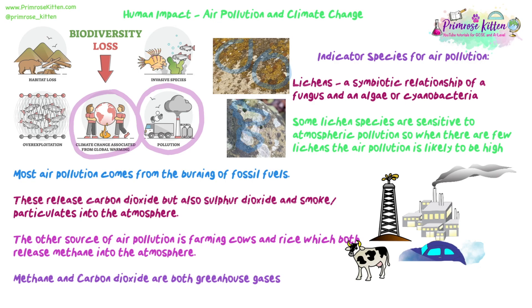Rice needs very special requirements of being quite waterlogged, so it's often grown in Asian countries, but its growth releases methane. Methane and carbon dioxide are both greenhouse gases. Burning fossil fuels and the growing of rice and farming of cattle both release carbon dioxide and methane, which are greenhouse gases.